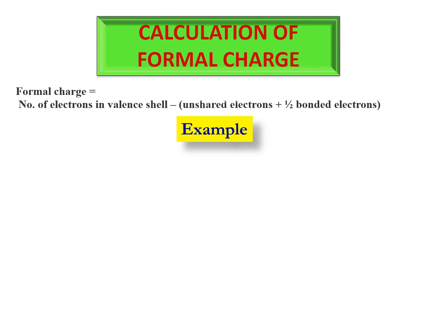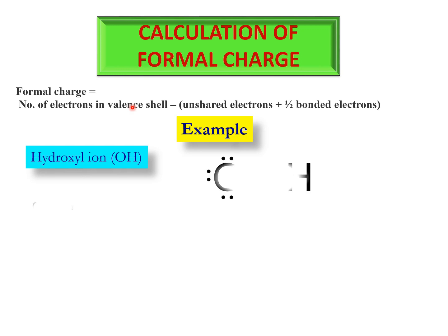To explain this with an example, let's start with an ionic species: the hydroxyl ion (OH⁻). As you know, it has a minus one charge, and that charge is associated with the oxygen atom. This is the electronic configuration of oxygen in the hydroxyl ion. This oxygen atom has six electrons in its outermost shell.